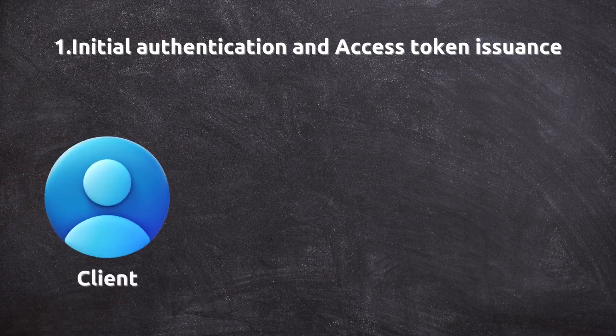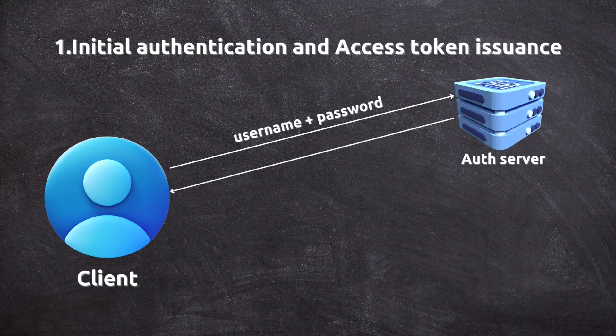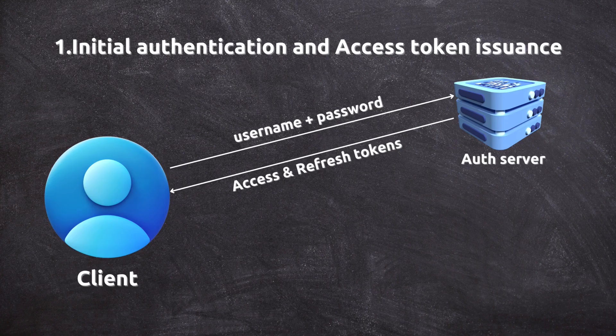When a user first logs in, they provide their credentials like a username and password. The server verifies these credentials, and if they are correct, it generates two tokens. First, an access token — a short-lived token, typically expiring in minutes or hours, that the client uses to access protected resources. Second, a refresh token — a long-lived token, usually valid for days or weeks, that the client uses to obtain a new access token when the current one expires.